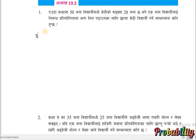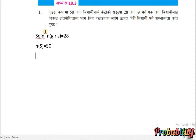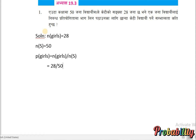Question Number 1. The number of goals is equal to 28, and the total number of students is 50. Probability of goals is equal to number of goals upon number of sample space, which is equal to 28 by 50. The lowest formula gives us 14 by 25.